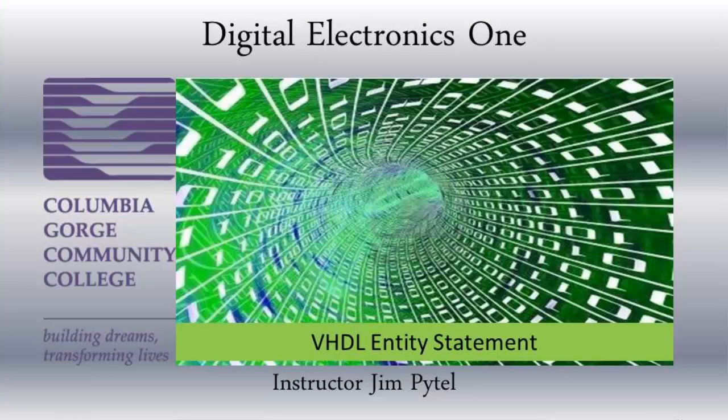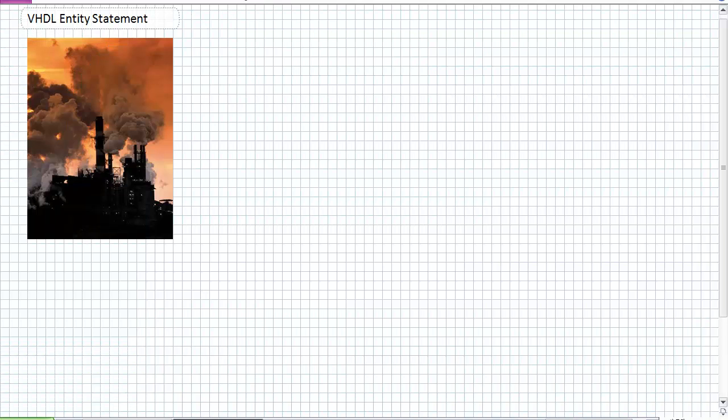Good day, this is Jim Pytel from Columbia Gorge Community College. This is Digital Electronics One. This lecture is entitled the VHDL Entity Statement. We continue a little in-depth in the examination of the VHDL Entity Statement. Previous lecture, we went over the general scheme for a VHDL program. We're actually going to dive into the Entity Statement. The Entity Statement is the description of the box from the outside. It's got inputs and outputs and a name for the box.